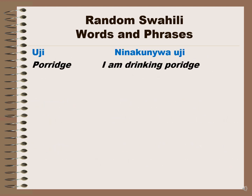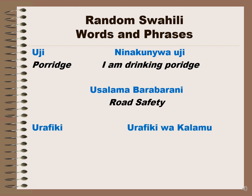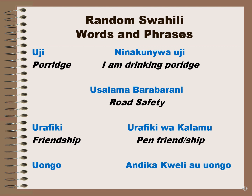Uji is porridge. 'Ninakunywa uji' means I am drinking porridge. Usalama barabarani is road safety. Urafiki is friendship. 'Urafiki wa kalamu' is pen friendship. Uwongo means false or lies. 'Andika kweli au uwongo' means write true or false.